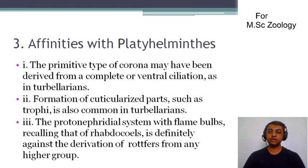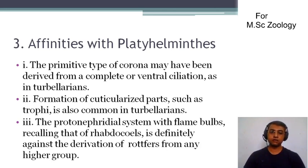Third, we see the affinities with the Platyhelminthes. The first affinity with Platyhelminthes is that the primitive type of corona may be derived from a complete or ventral ciliation as in turbellarians. In turbellarians, we see that there is complete or ventral ciliation, which is also found in rotiferans.